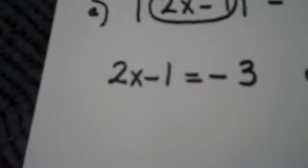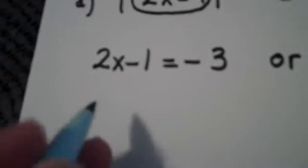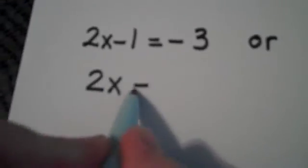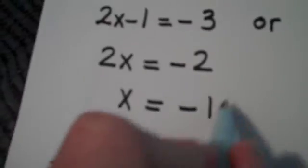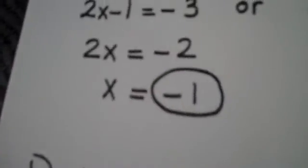2x minus 1 is either at negative 3 or 2x minus 1 is at positive 3. In the first case, when I add 1 to both sides of the equation, 2x is equal to negative 2, therefore x is negative 1. And there's one solution.